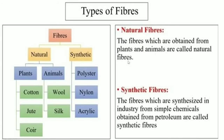Now we will first see about different types of fibers. The two sources of fibers are natural sources and artificial sources. The fibers which are obtained from plants and animals are called natural fibers. For example, cotton, jute, and coir are plant-based natural fibers, whereas natural fibers obtained from animals are wool and silk. The next type is synthetic fibers — the fibers which are synthesized in industry from simple chemicals obtained from petroleum are called synthetic fibers.